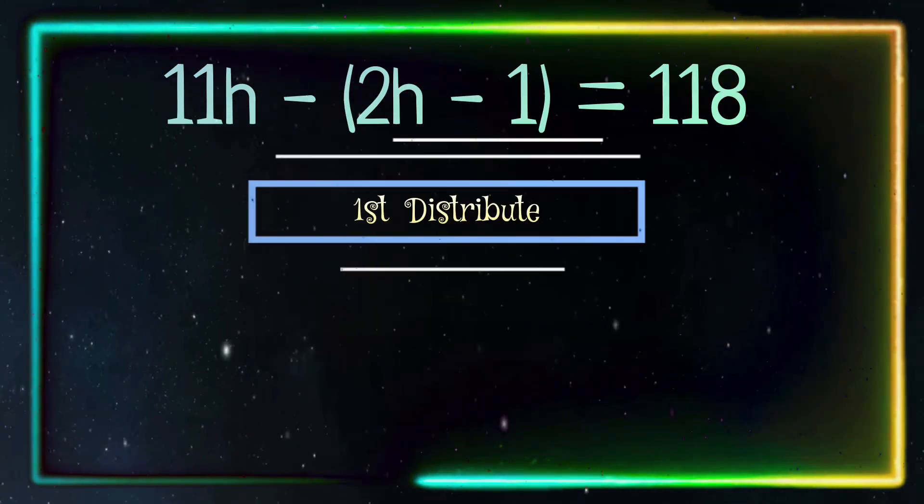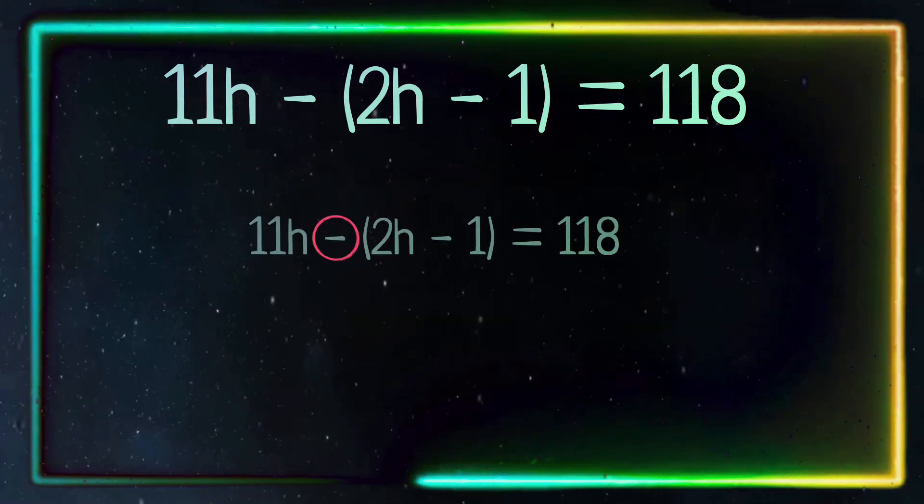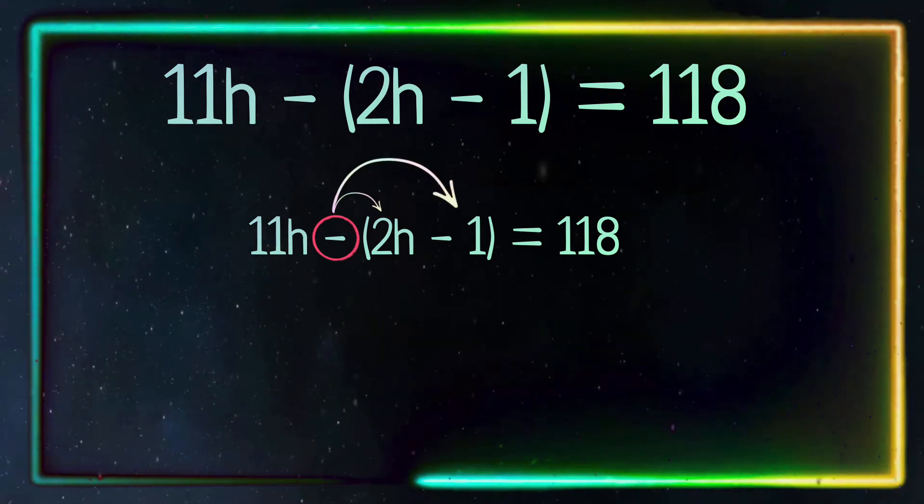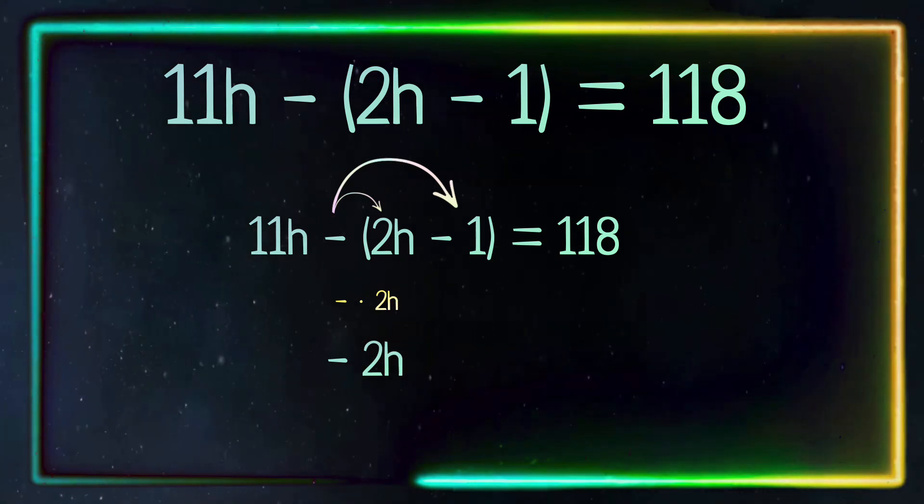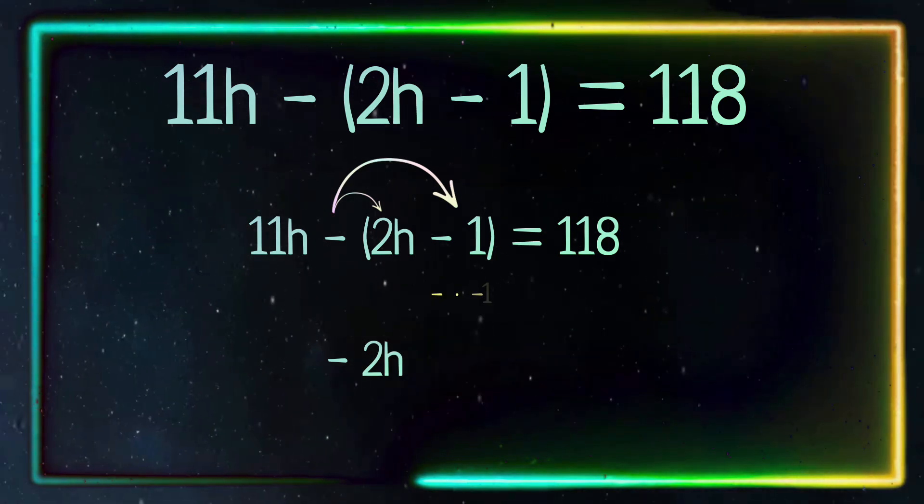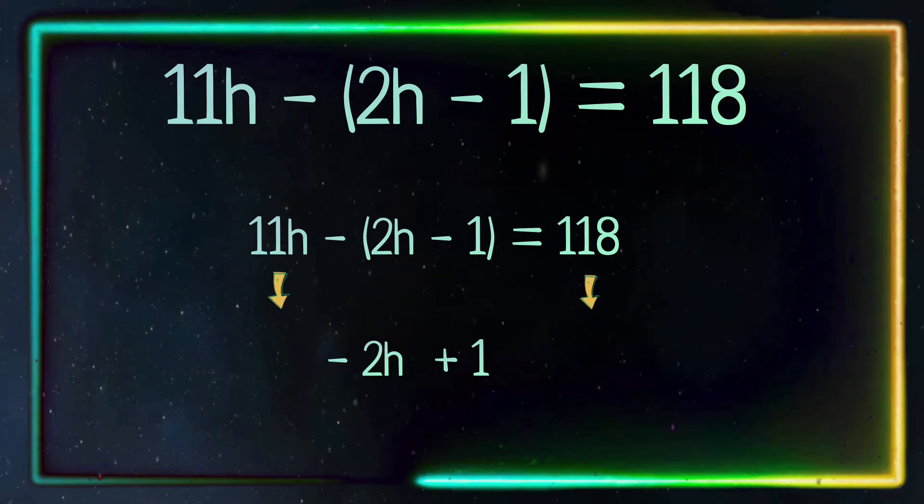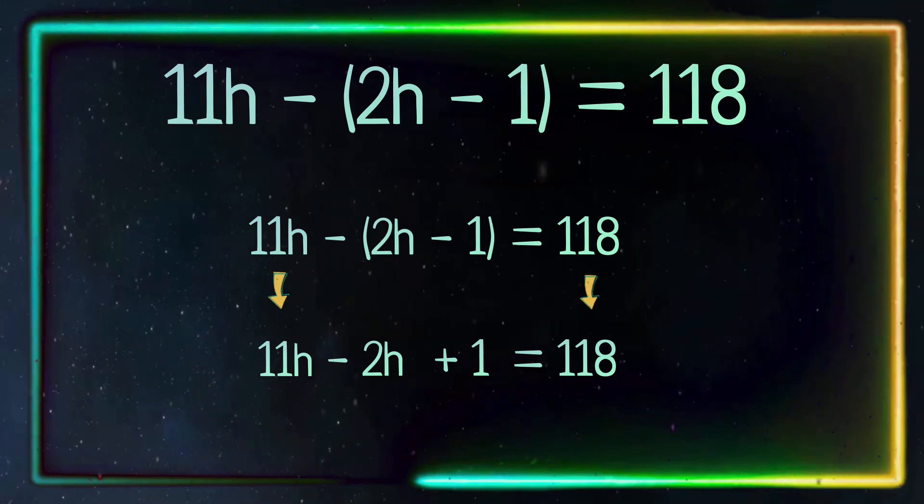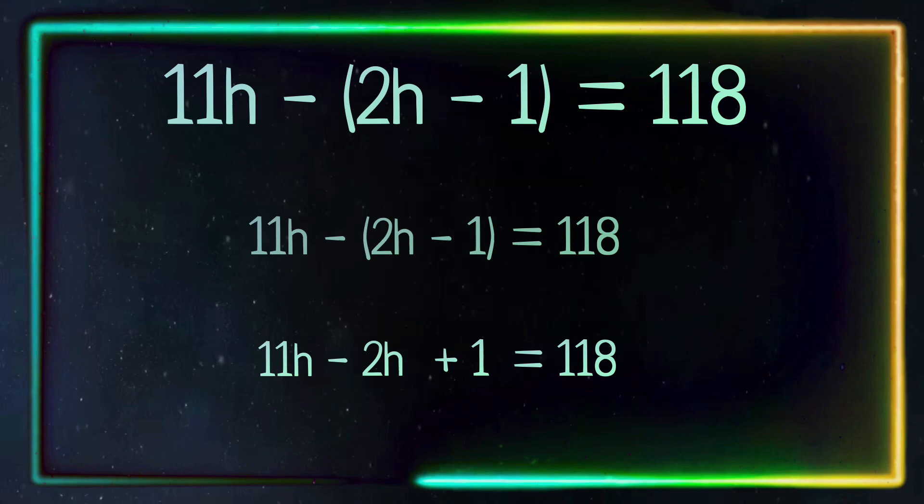First, we are going to distribute the negative sign to what is in the parentheses. The negative times 2h equals negative 2h, and the negative times negative 1 equals positive 1. Bring down the rest of the equation and we have 11h - 2h + 1 = 118.